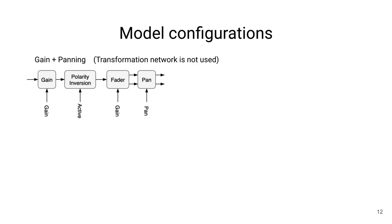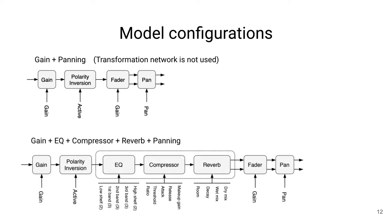For simplicity, we consider two different model configurations. First, just gain plus panning, where the transformation network is completely omitted. This enables us to train larger models due to memory constraints, and in this case we have just gain and panning, which allows you to create a pretty decent mix as a starting point. We additionally also consider a configuration with the transformation network modeling those processors — gain, EQ, compressor, reverb, and panning — for every single channel in the mixing console.